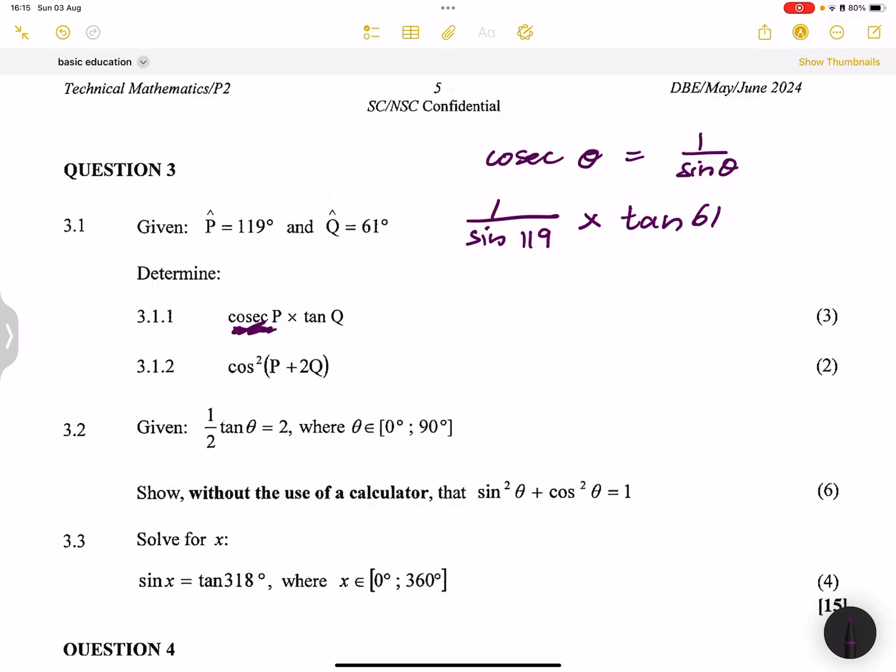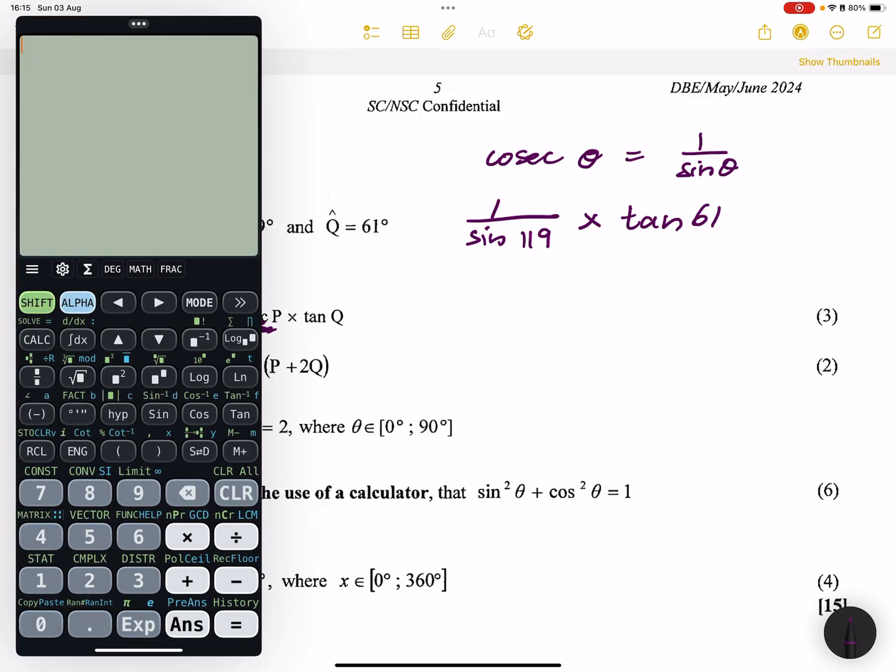All right. In this case, we can put that into our calculator, which is, so that's one over the sine of 119. And this is multiplied by the tan of 61. Now in this case, we get 2.06. That's the value that we get.